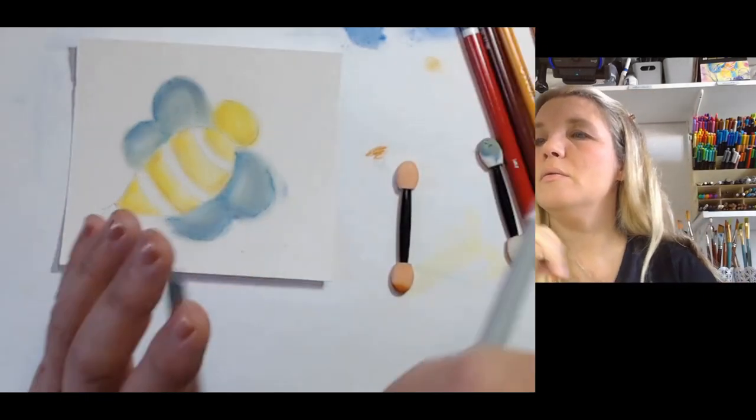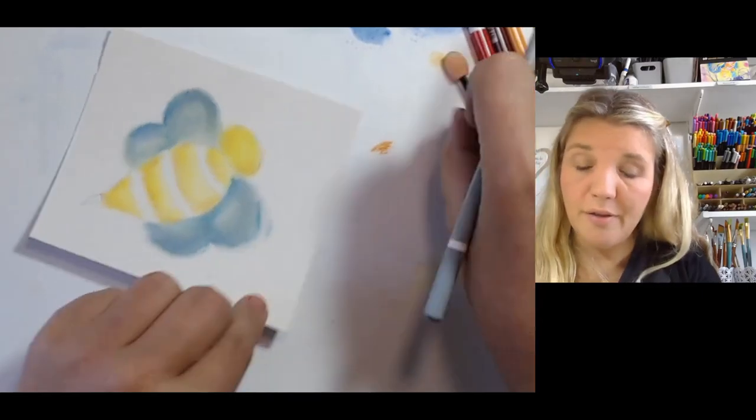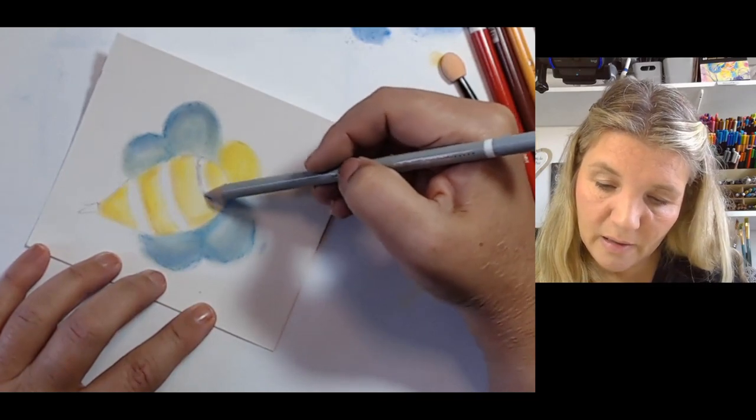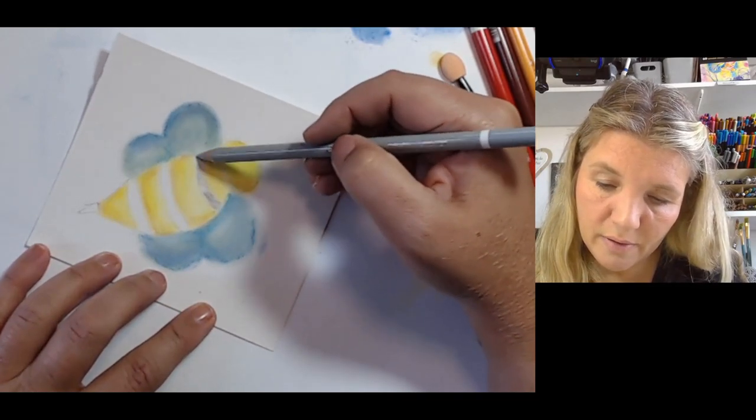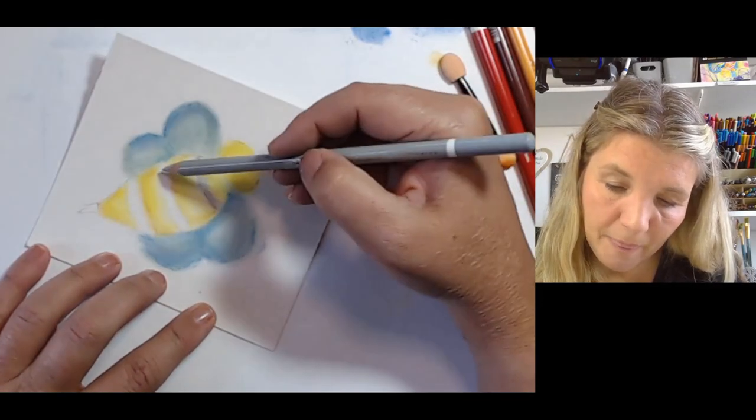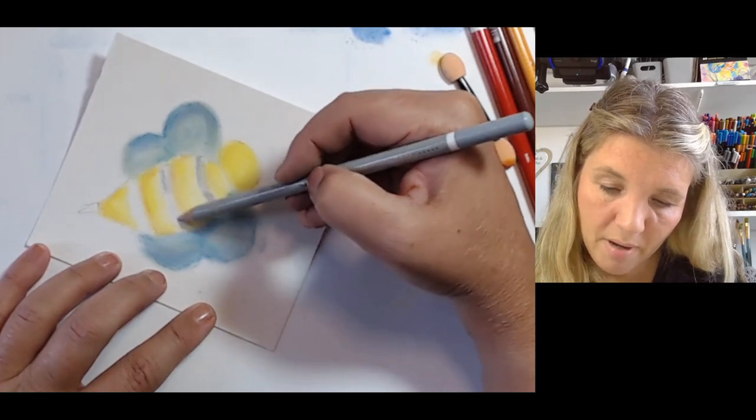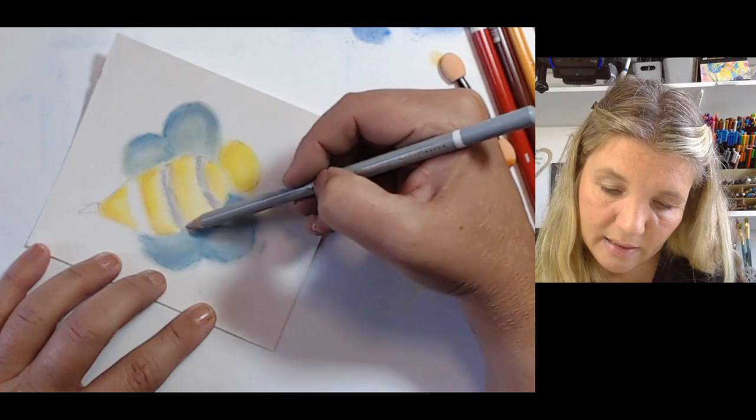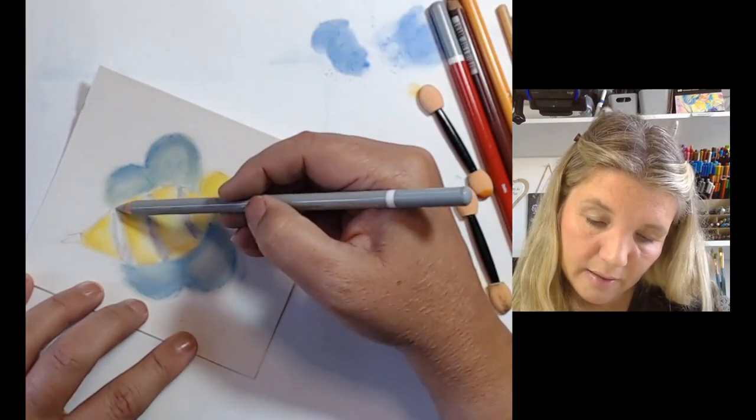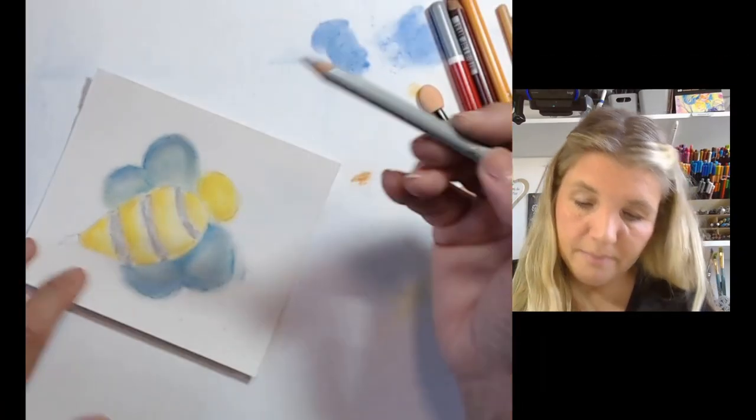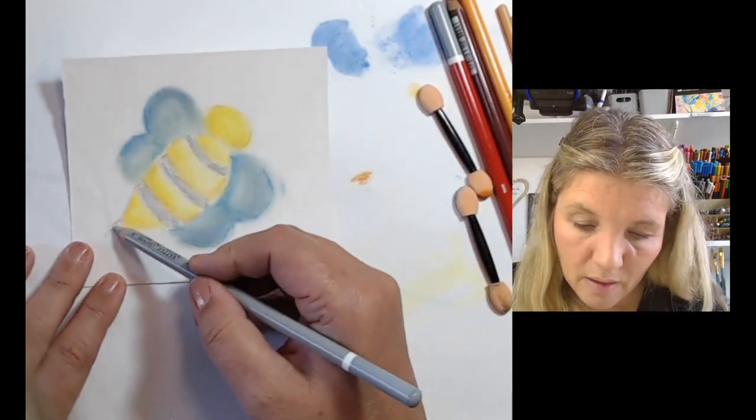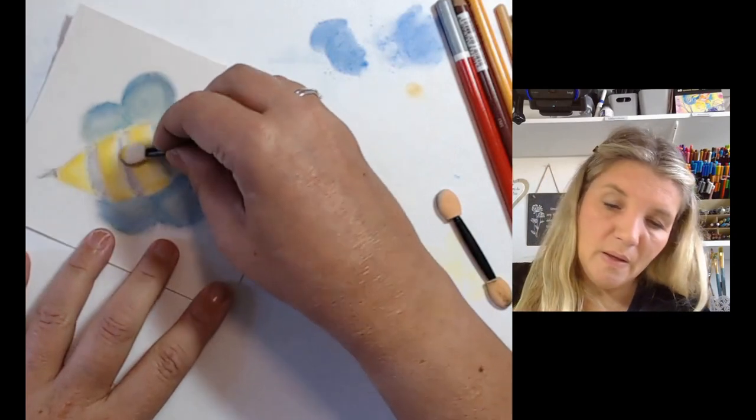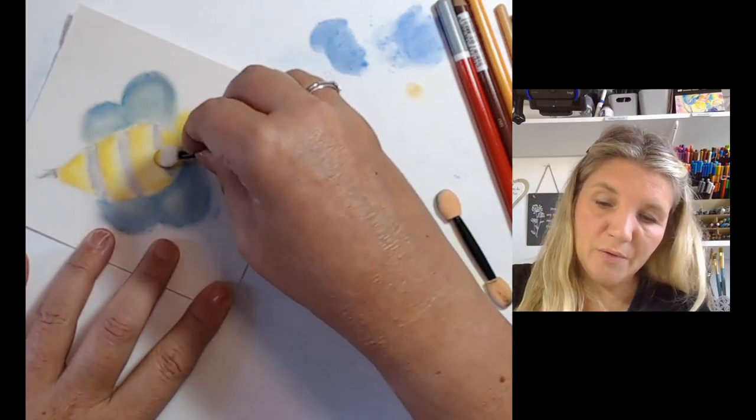Now for the middle part, I'm going to use some grays rather than black, because black is a very strong color. And we know that bumblebee stripes are black, but as the light hits it, it can to our eyes seem like variations of gray.